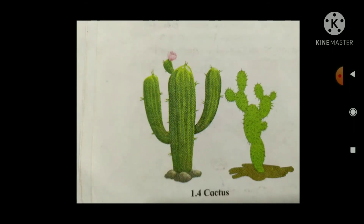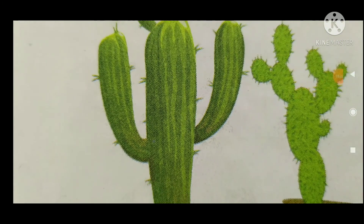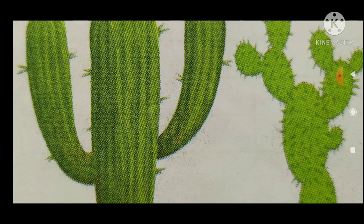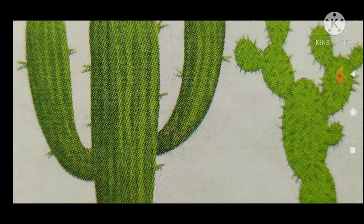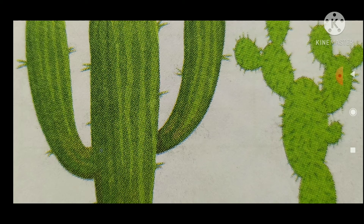The leaves of the cactus are needle-type — they have a needle-type, sword-like, and thorn-like shape. Because of this adaptation, they lose very little water by evaporation.